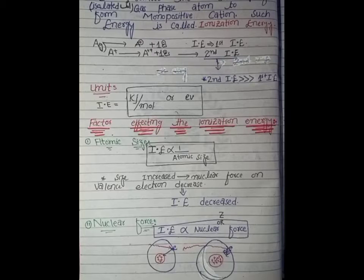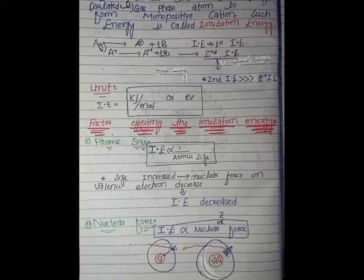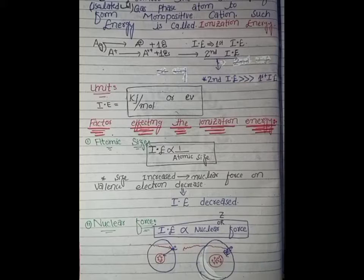Factors affecting ionization energy. The first factor is atomic size. Ionization energy is inversely proportional to atomic size.